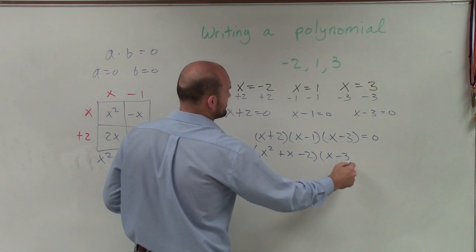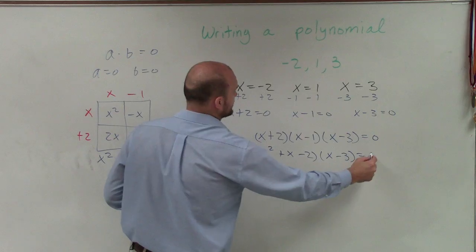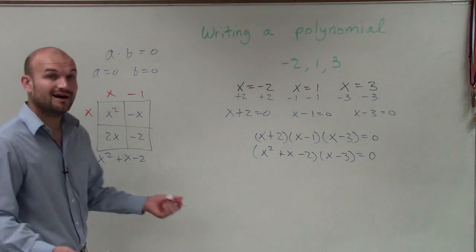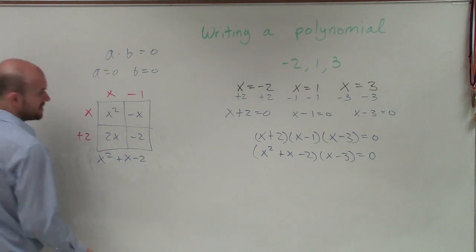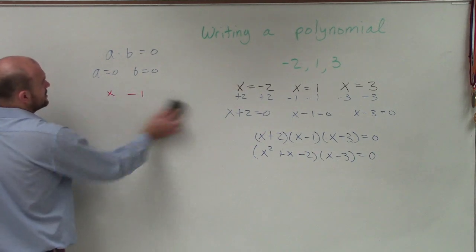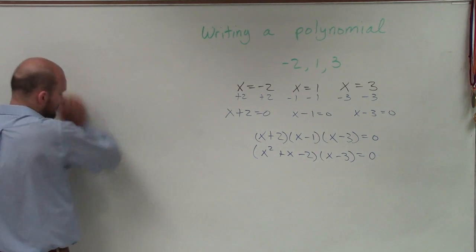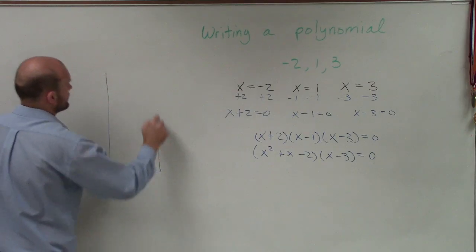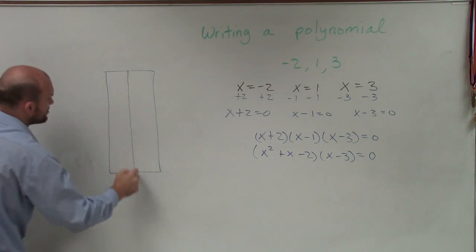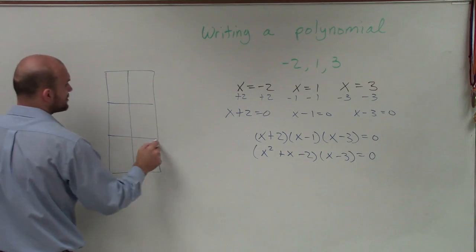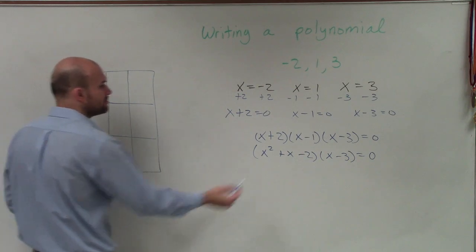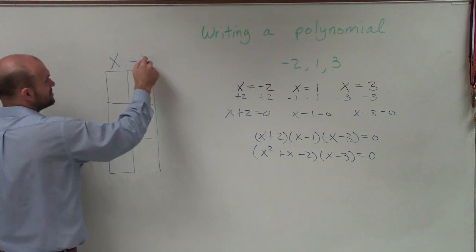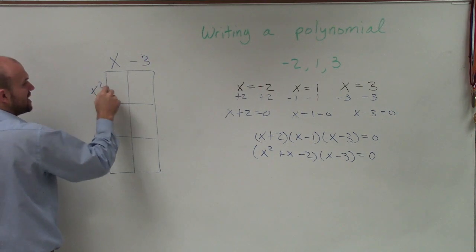Now I'm going to multiply that result by x minus 3, equals 0. So we have to do our multiplication technique again. I'm going to erase this because I'm running out of space. I'll create another box — this one will be more rectangular, because now I'm multiplying a trinomial times a binomial. I'll put the binomial on top and the trinomial on the side.